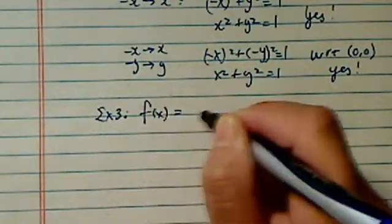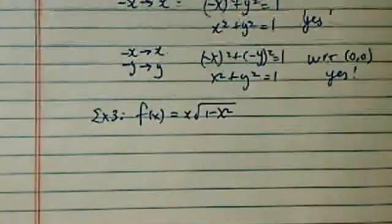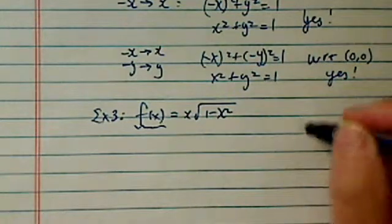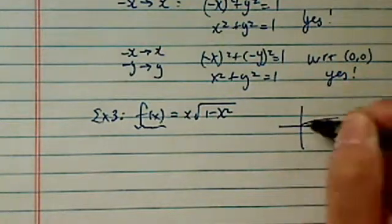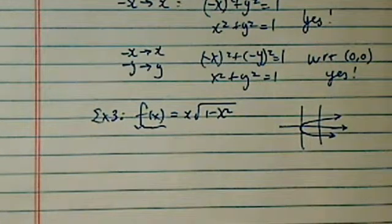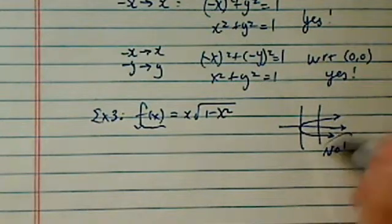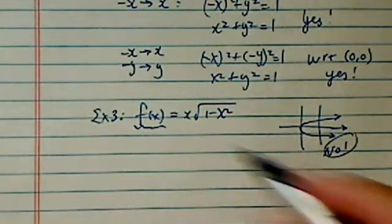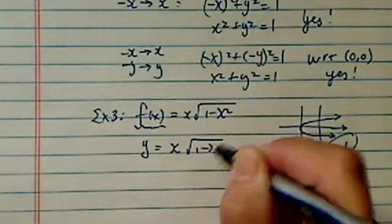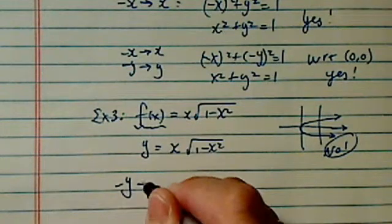Example 3, we actually have a function here: f(x) = x√(1-x²). This is actually an interesting one. It's specified as a function, so we know it's not going to be symmetrical with respect to the x-axis because this one goes against the definition, the very definition of function. So let's replace this one in standard form. We're going to try it. So we're going to replace minus y with y.